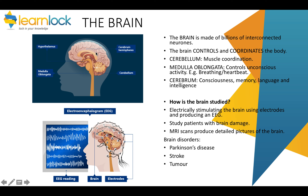Then you've got the cerebral hemisphere — the cerebral cortex — which is responsible for consciousness, intelligence, memory, and language. It's split into two halves: the left and the right. The brain can be studied in a number of ways: it can be stimulated with electricity using electrodes to produce an EEG. Scientists have also studied people with brain damage to look at how the brain responds, and an MRI scan can produce a detailed picture of the brain. Brain disorders include Parkinson's, stroke, and brain tumours.